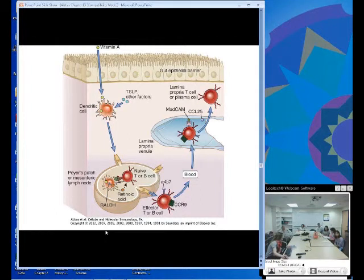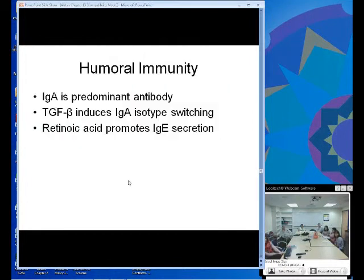Within lymph nodes, it's in the dendritic cell exposed to retinaldehyde dehydrogenase, which changes the vitamin A into its active form retinoic acid. It can then influence T and B cells to upregulate alpha-4 beta-7 and CCR9 when it becomes a gut-restricted cell.